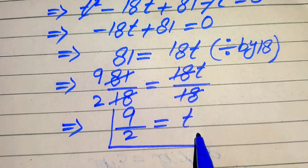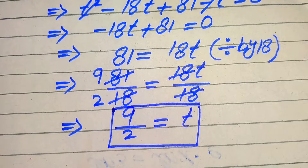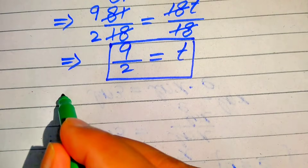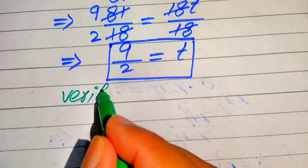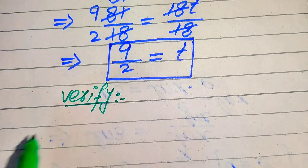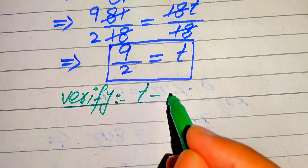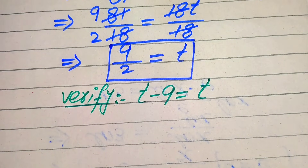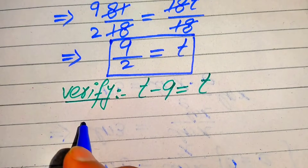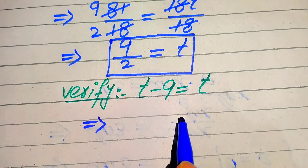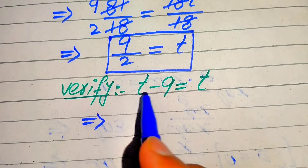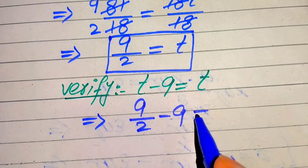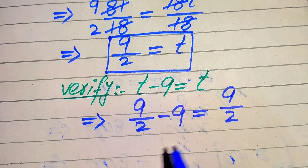So t equals 9 over 2 is our final value of t. Now in the next step we need to verify this value. For verification we copy the given question statement: t minus 9 is equals to t. We substitute the value of t on both sides — here t equals 9 over 2, so we have 9 over 2 minus 9 equals 9 over 2.